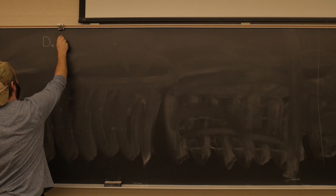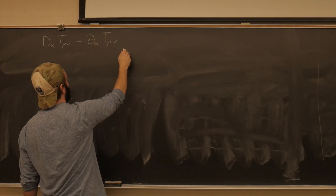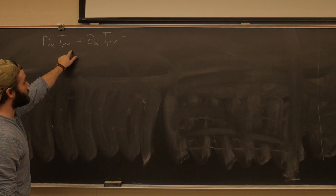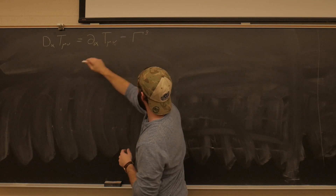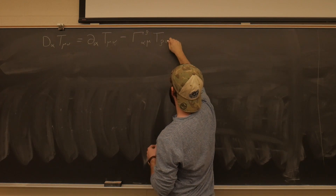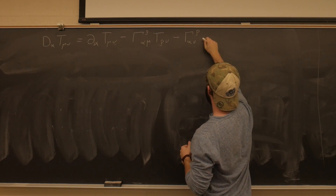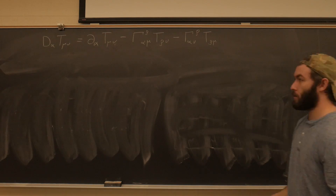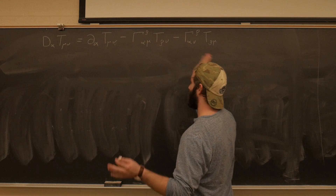The covariant derivative — I'm going to use alpha — of some tensor T_mu_nu is equal to that partial derivative still, partial_alpha T_mu_nu. Since these are both downstairs, it's going to carry a minus sign with the connection coefficients, and we're going to be transforming each of the indices, so that's why there's two terms. So it's going to be minus gamma_rho_alpha_mu T_rho_nu, and then the next one we just swap mu and nu: minus gamma_rho_alpha_nu T_rho_mu. So this is how we take the covariant derivative of a second rank doubly covariant tensor. If these were upstairs, both of these would be positive. If one was upstairs and one was downstairs, one would be positive, one would be negative.